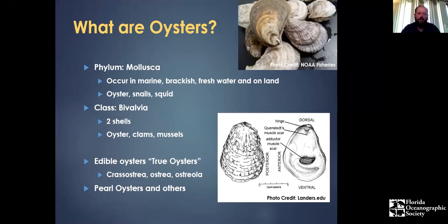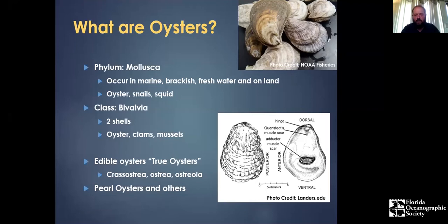When you start looking at oysters specifically, they can be separated into a number of groups. One of the more common ways is the term 'true oyster' versus others. True oysters include essentially all the edible oysters — if you've eaten an oyster, you've eaten a true oyster. Then there are pearl oysters and similar species that people don't typically eat.